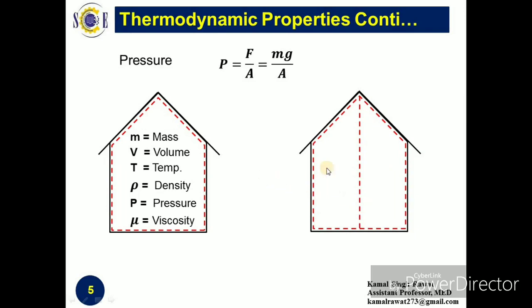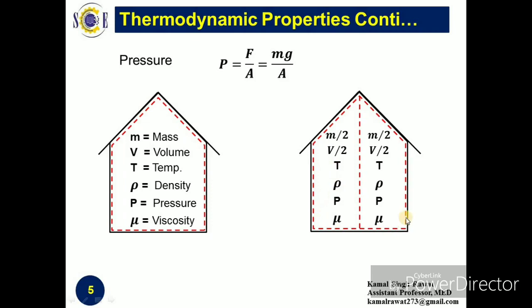For this, we divide the system into two equal parts by an imaginary boundary and observe the effect on properties. Mass is divided into two equal parts because it is an extensive property. Similarly, volume is also divided into two equal parts. However, the value of temperature remains constant for each side because it is an intensive property. If you divide the room into two equal parts, mass and volume become half for each side, but temperature remains the same on both sides because it does not depend upon the extent or size of the system. Similarly, the values of density, pressure, and viscosity are also unchanged — so they are intensive properties.